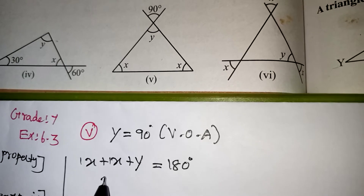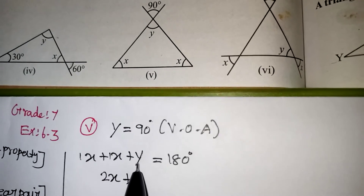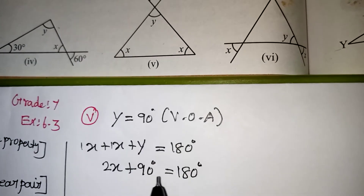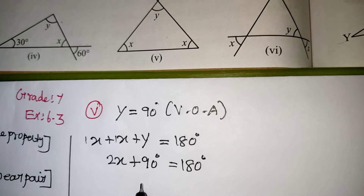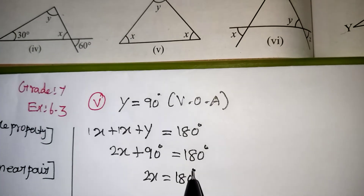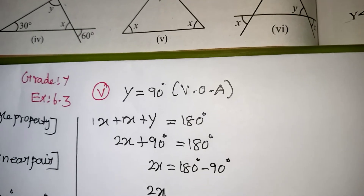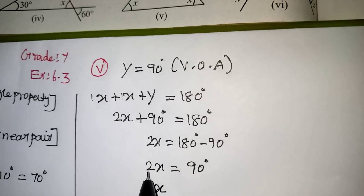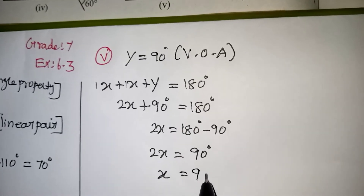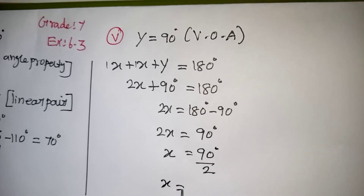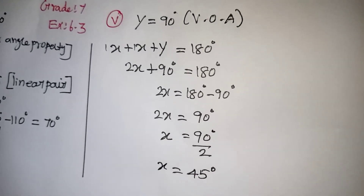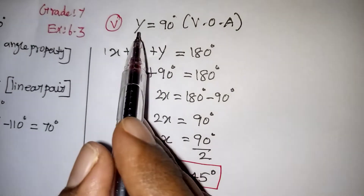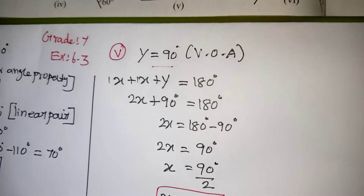x plus x will be 2x. In the place of y, we substitute 90 degree: 2x plus 90 equals 180. Taking plus 90 to the other side gives minus 90, so 2x equals 180 minus 90, which is 90. To find x alone, bring the multiplication of 2 to the other side as division: x equals 90 divided by 2, which gives x equal to 45 degree. y value we already got, which is 90. We will move on to the next problem now.